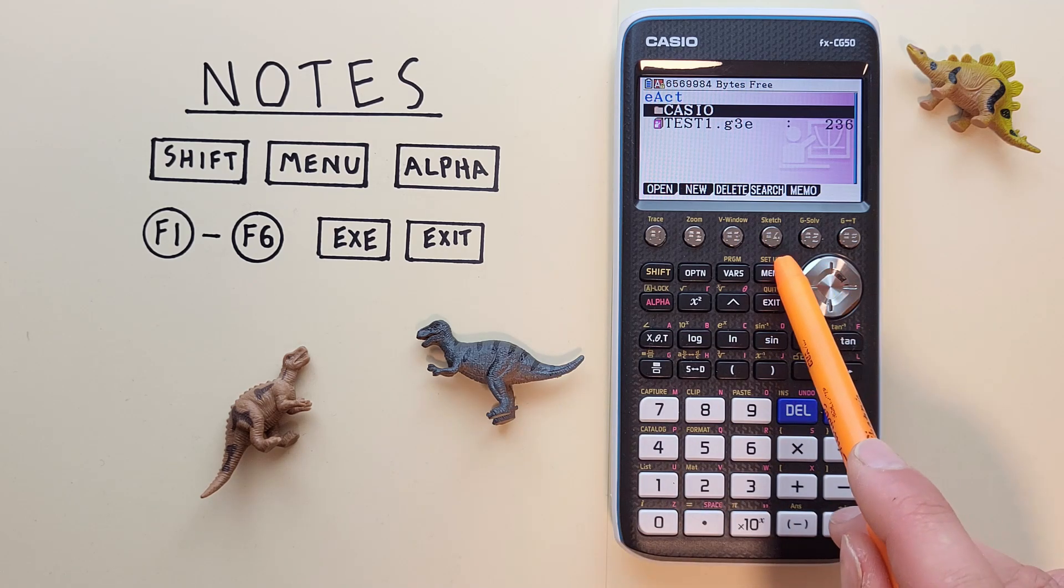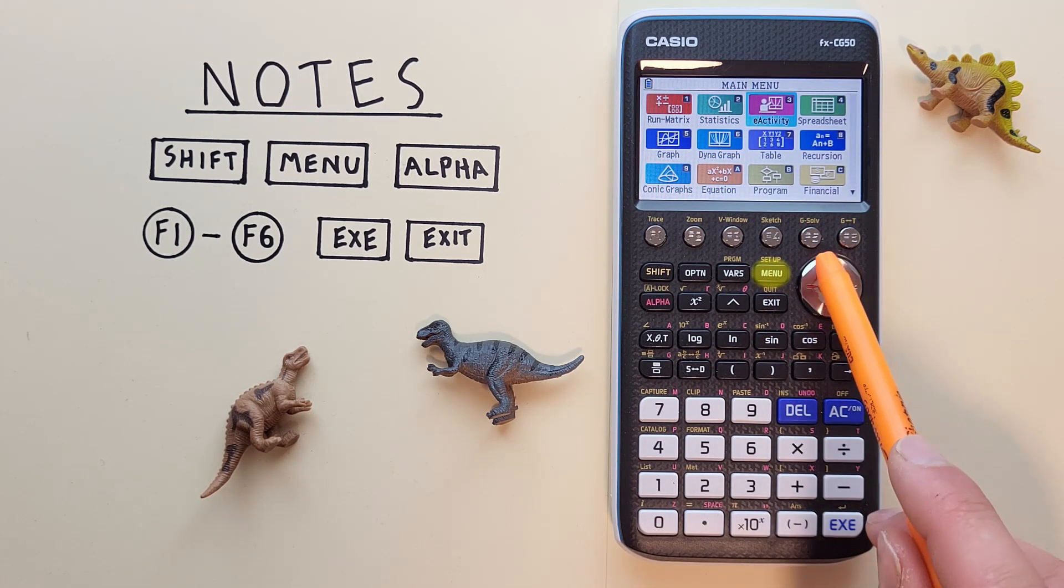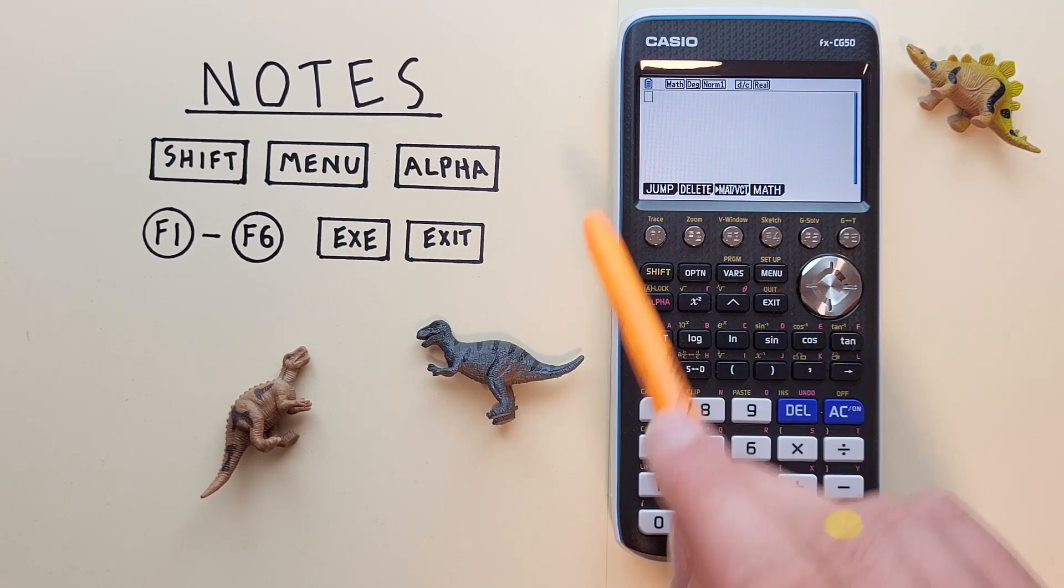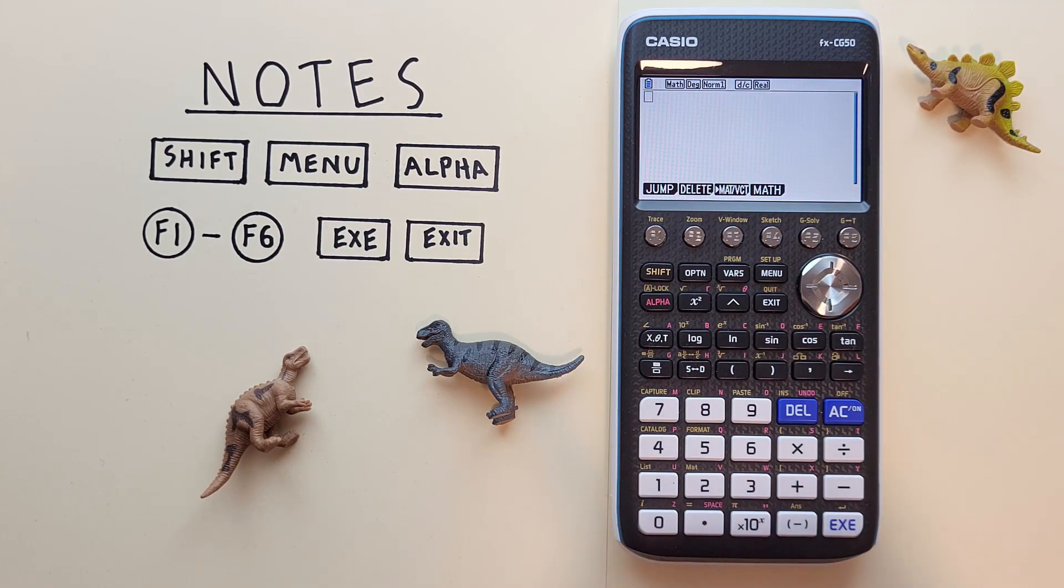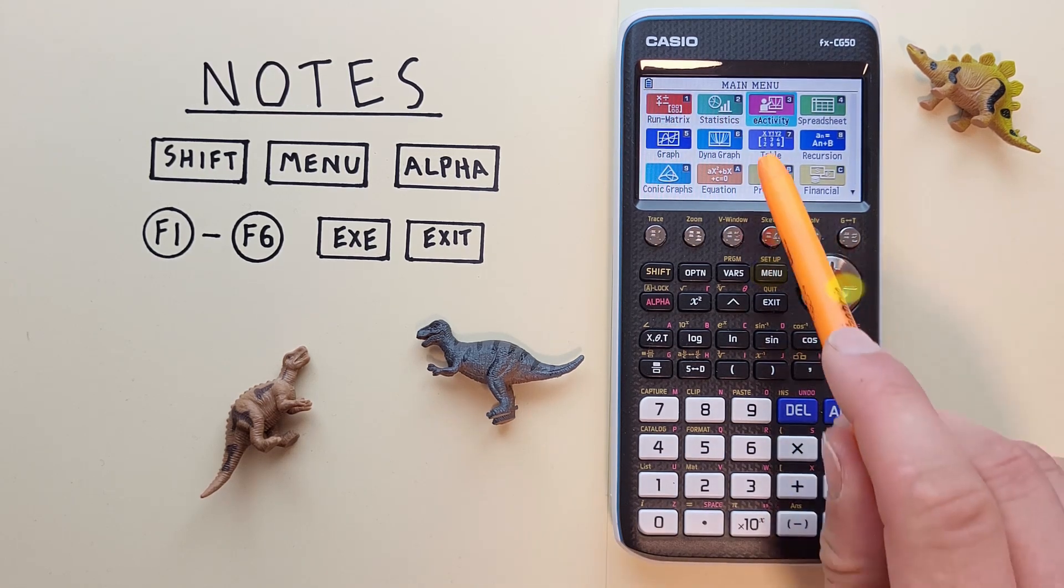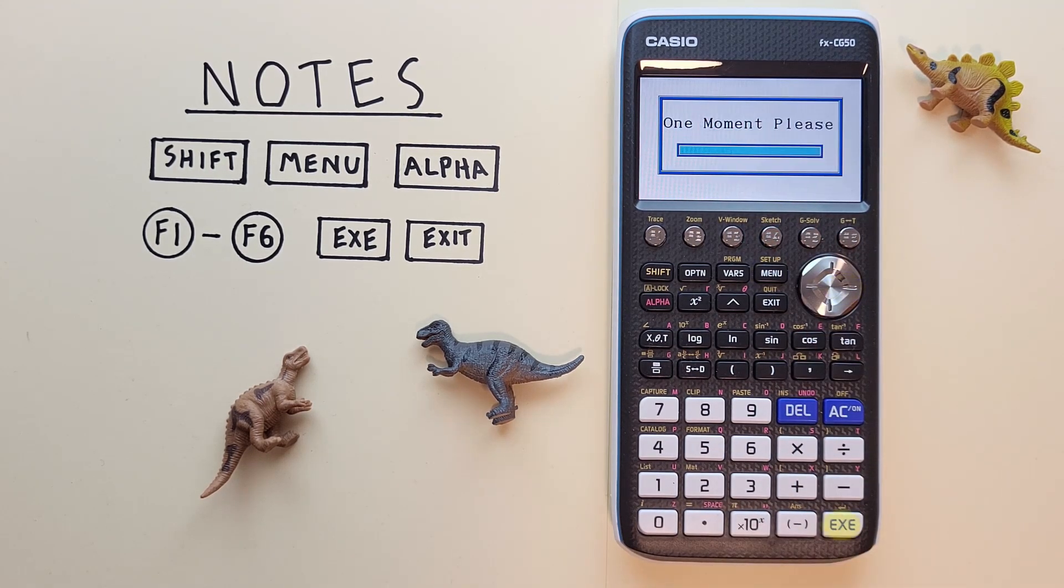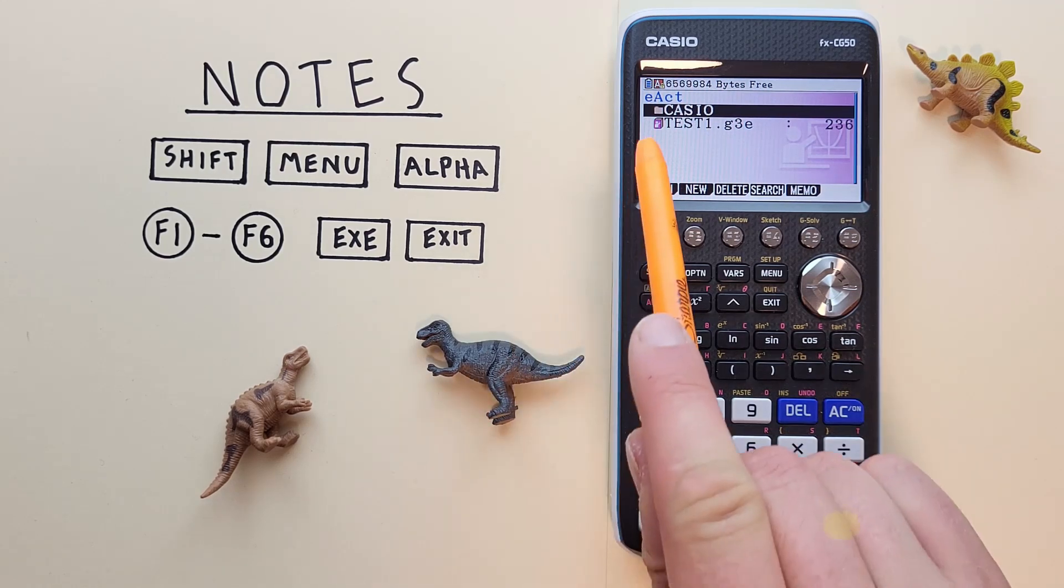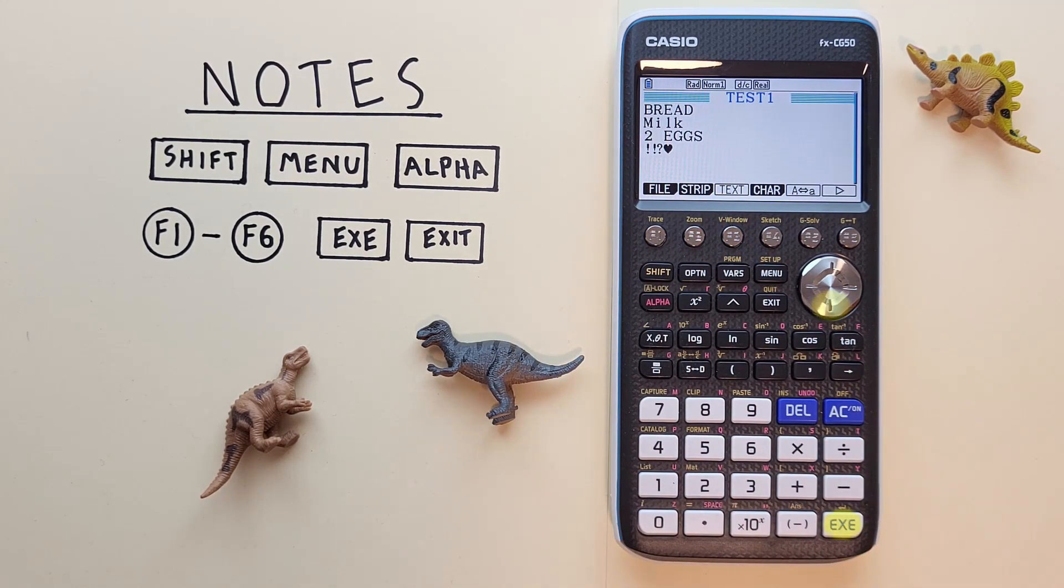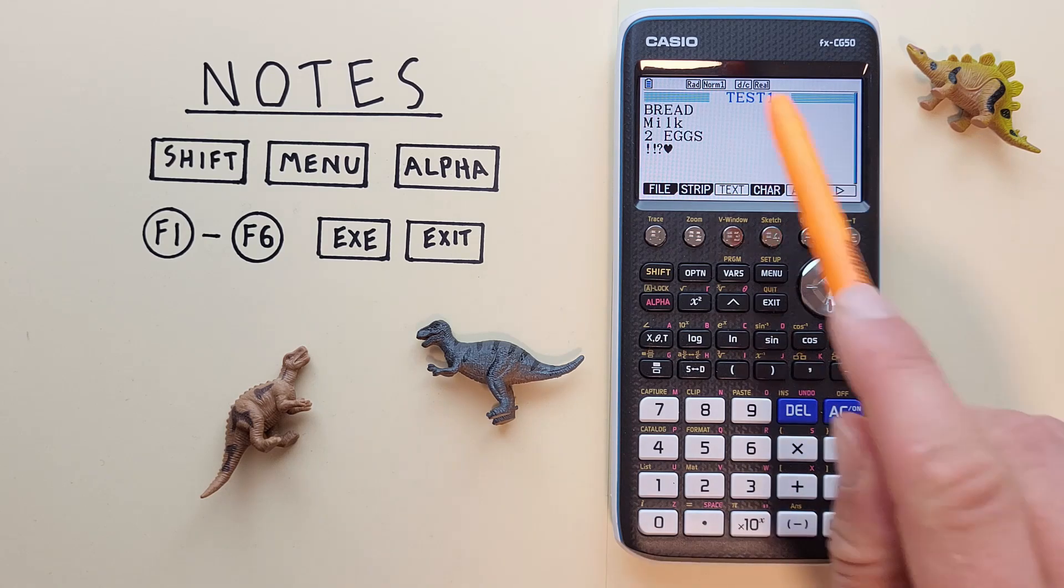So if we exit out of this back to our main menu, say we're working on some equations here and want to go back to our note. We can go menu, scroll back to eActivity, select it. There's our test one note. So we can go down to it and select it. And there we go. We're back in our note.